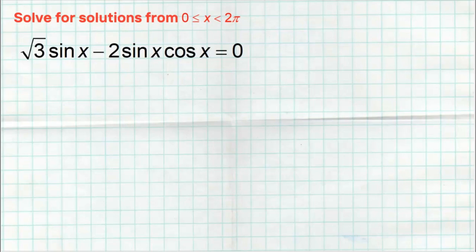So in this very first problem here, we're asked to solve for all solutions from zero to two pi. The first thing I notice is that the whole point of this is that we're going to need some factoring. So I have two terms — terms are anything separated by minus or plus signs — and I'm always looking for what can I factor out.